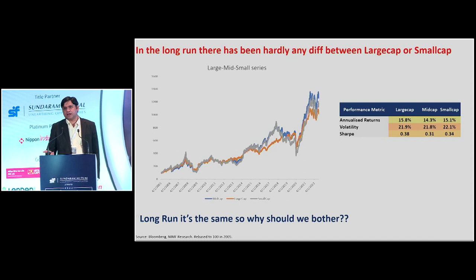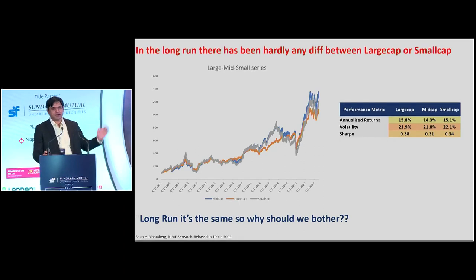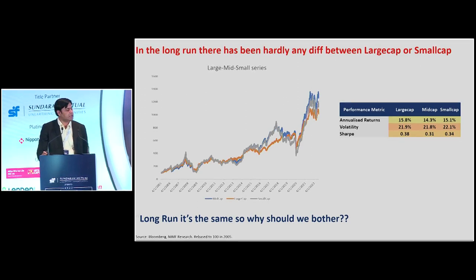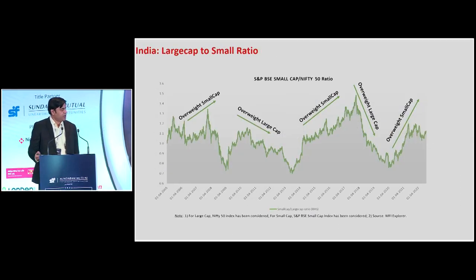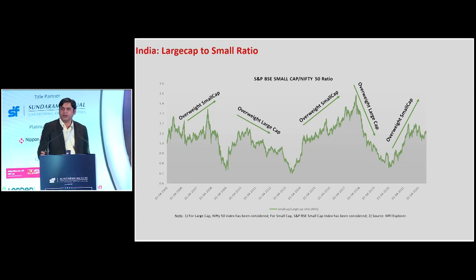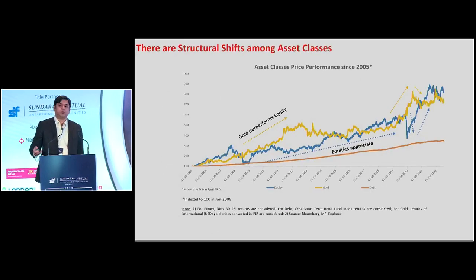Now, this was about the asset class. If you look at the sub-asset class, since 2005, since we have a small cap index in our country, there's hardly any difference in the performance of large cap, small cap, and mid cap — absolutely nothing. Point to point, they have given similar returns, which is around 15%. But if you break it up, we all know that the leadership keeps changing period after period. Sometimes large caps outperform small caps, and vice versa. We know this also happens primarily at the asset class level.